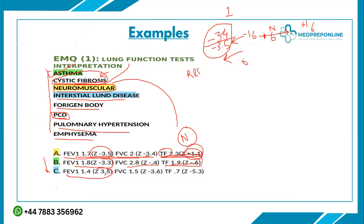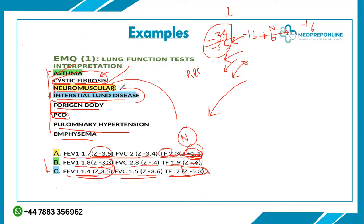Case 3: FEV1 z-score is minus 3.5 — decreased. FVC z-score is minus 3.6 — also decreased. Both equally decreased, so the ratio is normal, indicating a restrictive pattern. The TF factor z-score is minus 5.3, which is severely decreased — well beyond even the very severe category. A restrictive pattern with severely decreased DLCO points to interstitial lung disease.